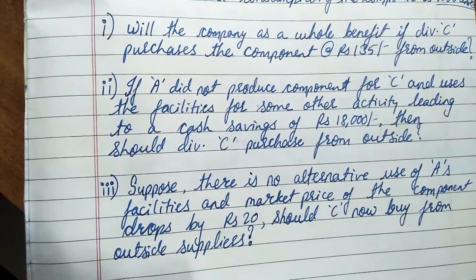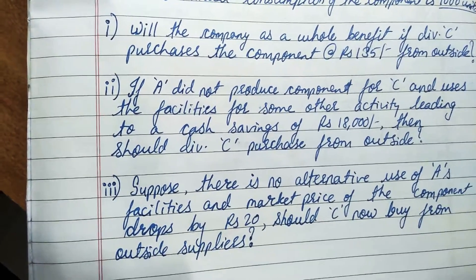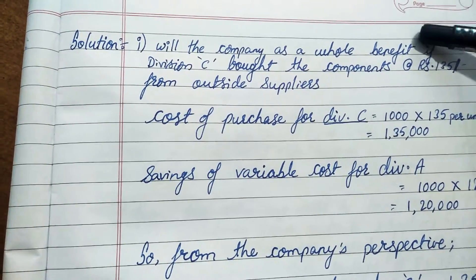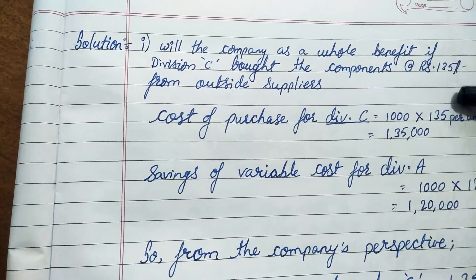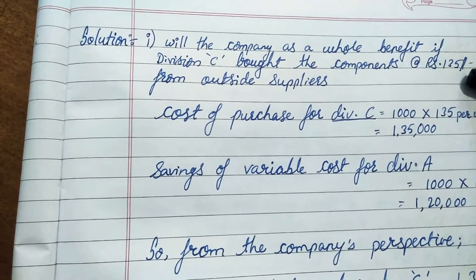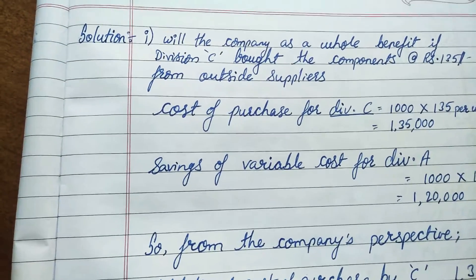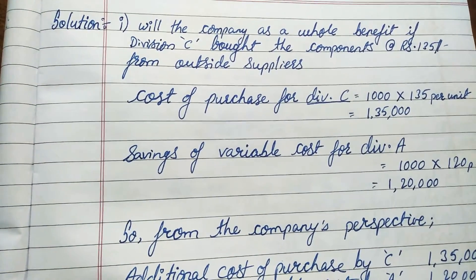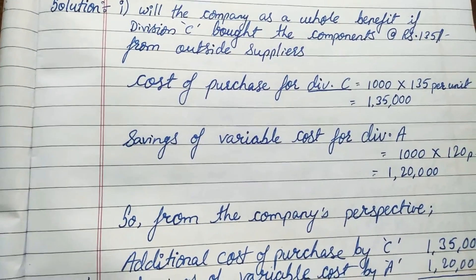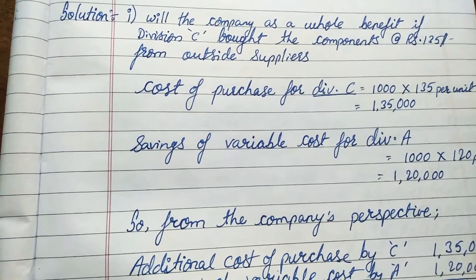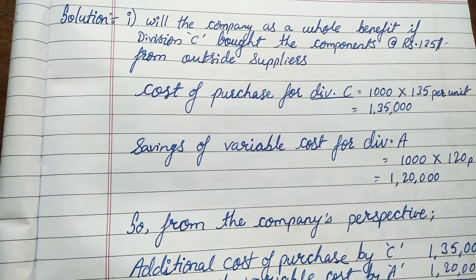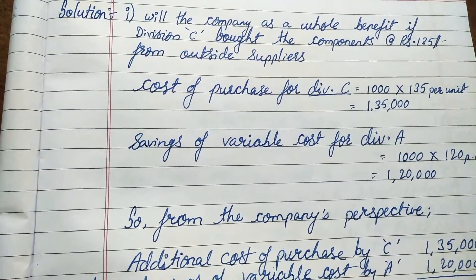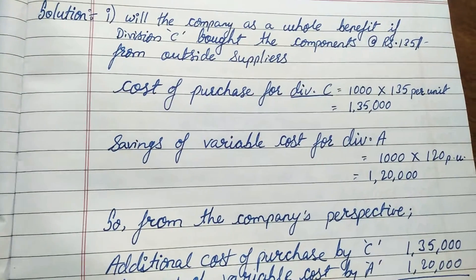These are the three scenarios and three questions based on the given data. Now let's move to the solution. For part one: will the company as a whole benefit if division C buys the components at 135 rupees from outside suppliers? The cost of purchase for division C would be 1000 units × 135 rupees per unit, giving a total cost of purchase of 135,000 rupees.